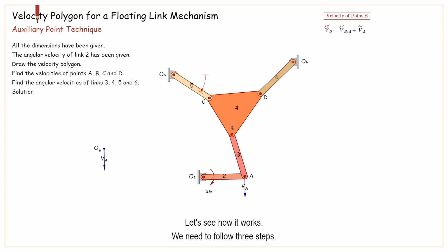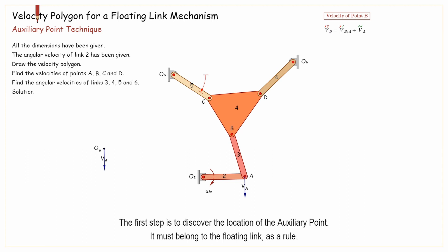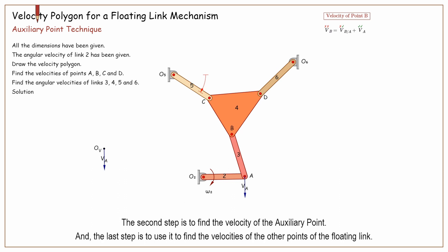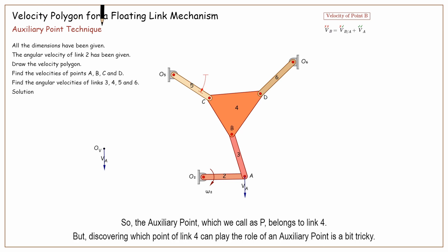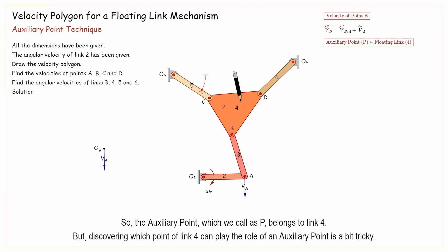Let's see how it works. We need to follow three steps. The first step is to discover the location of the auxiliary point — it must belong to the floating link, as a rule. The second step is to find the velocity of the auxiliary point. And the last step is to use it to find the velocities of the other points of the floating link. So, the auxiliary point, which we call P, belongs to link 4. But discovering which point of link 4 can play the role of an auxiliary point is a bit tricky.